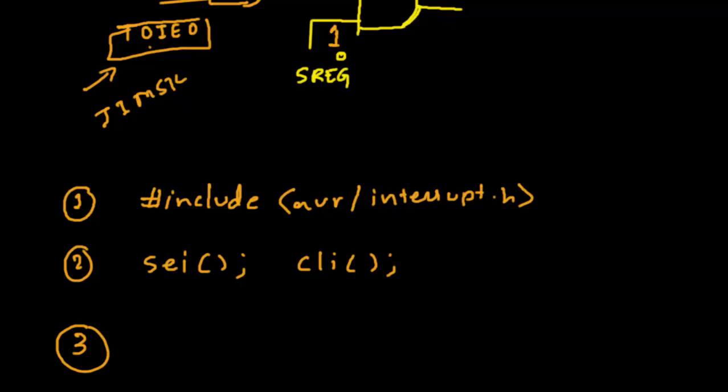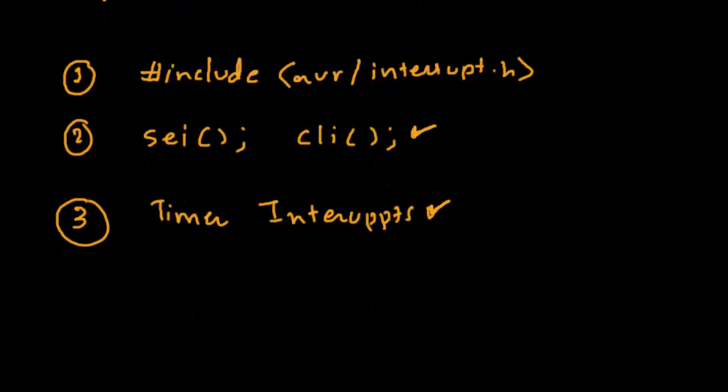The third thing is we need to turn on the actual individual interrupts — for example, for timers we need to turn on the timer interrupts. The first step was master control via sei; the second is individual control of the specific interrupt. After that we need to write the interrupt service routine — this is what gets executed when a particular interrupt occurs. That is all about AVR interrupts covered in this video. In the next video we'll configure the timer interrupts and see how it really works.